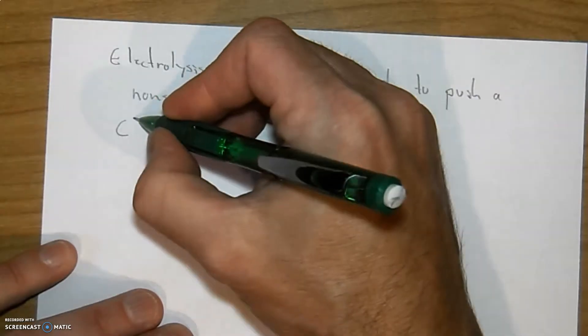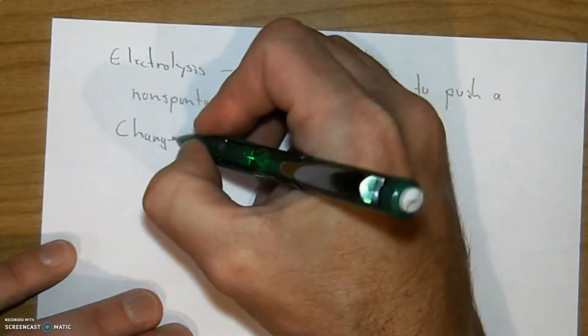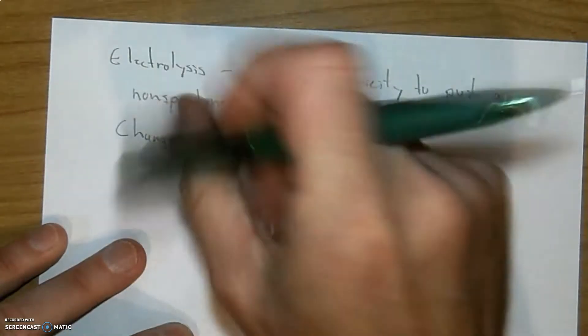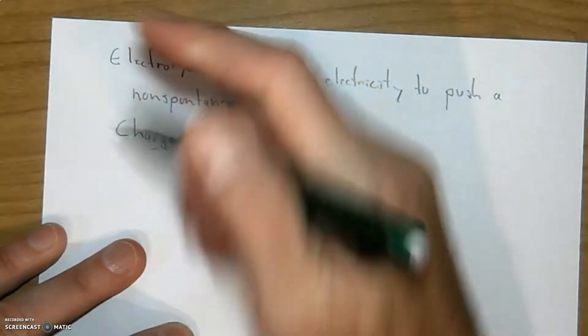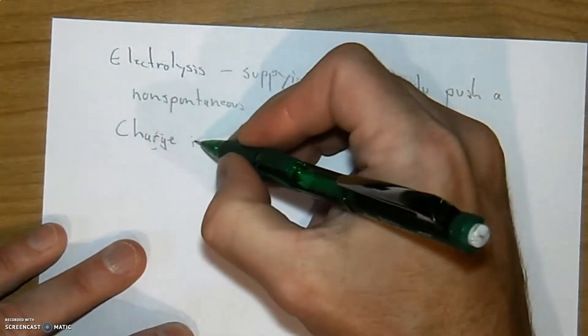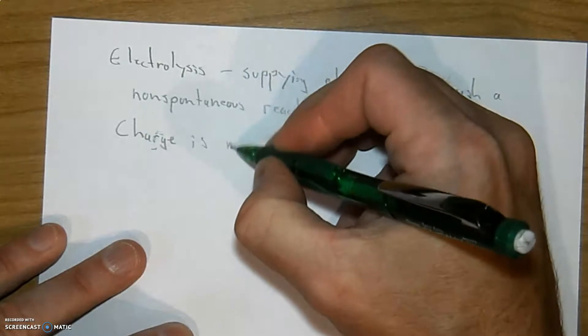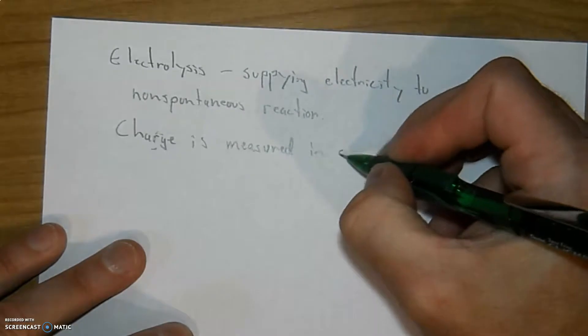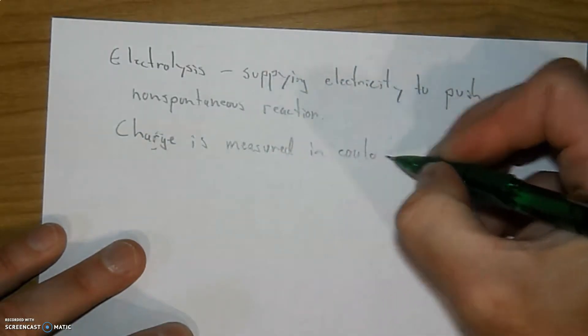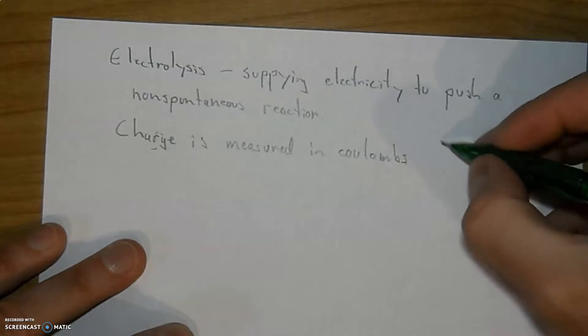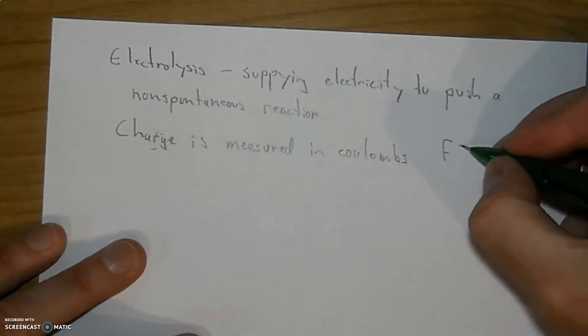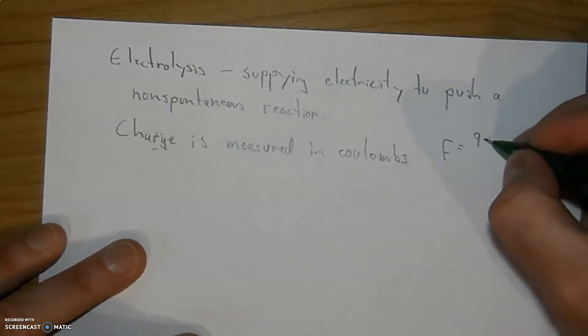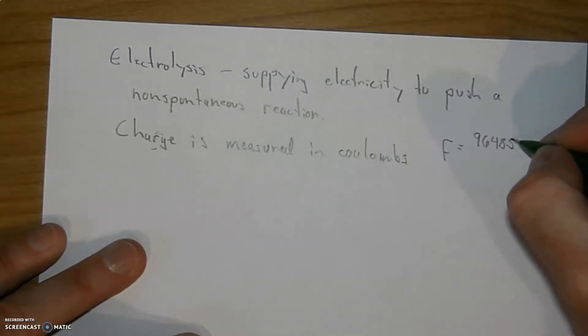Based on what we have talked about before, the charge is measured in coulombs. And just to throw it in, that's something that we talked about before, roughly 96,485 coulombs per mole.